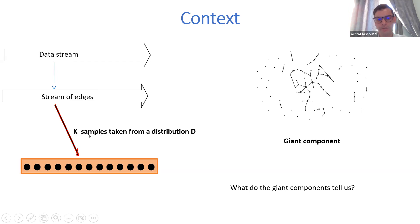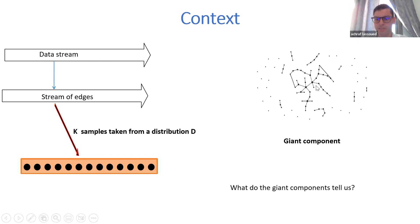We take a constant number of samples from distribution D, and we have these edges in a reservoir, which is a random graph. A major subject around this random graph is to know if it has a giant component. The giant component is a connected component that has a size larger than a constant fraction of the number of nodes.